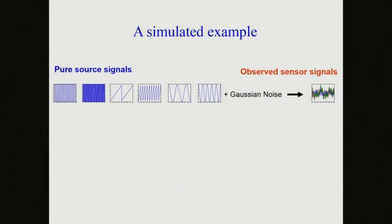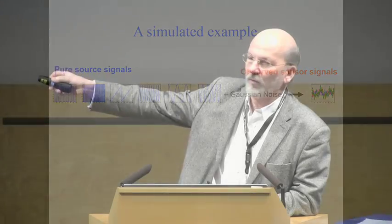Here's a simulated data example. I have six signals: rectangular signals with two different frequencies, triangular signals with two different frequencies, and two sinusoids with different frequencies. I generated 100 sets of six coefficients to sum these signals together, then added a little bit of Gaussian noise, giving a matrix with 100 lines and about 800 points corresponding to these mixed signals.